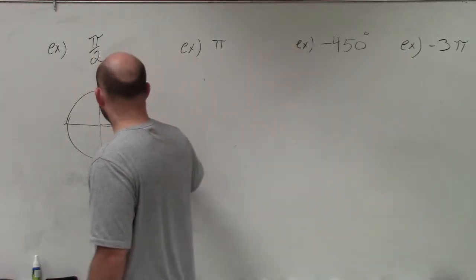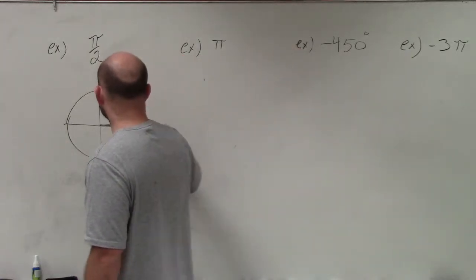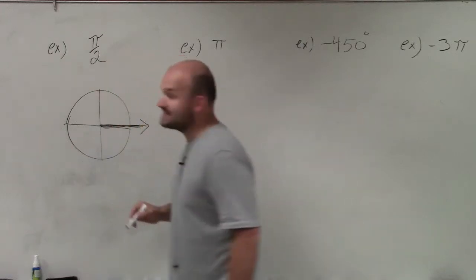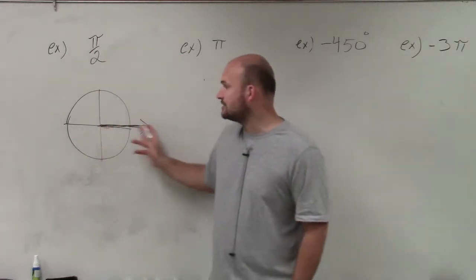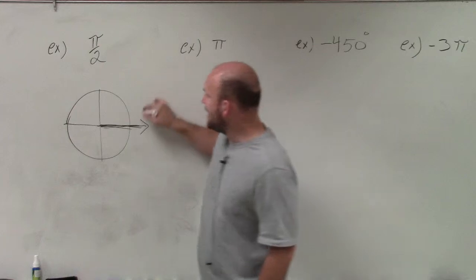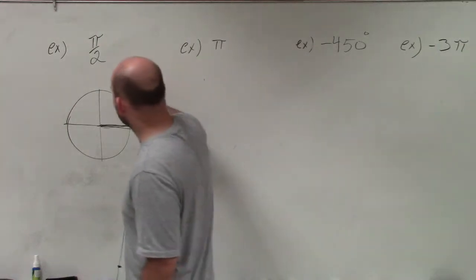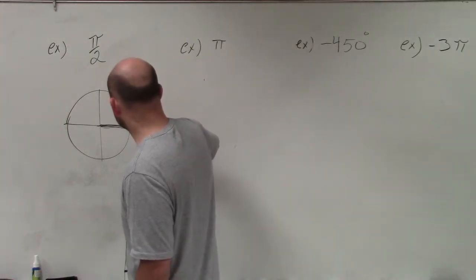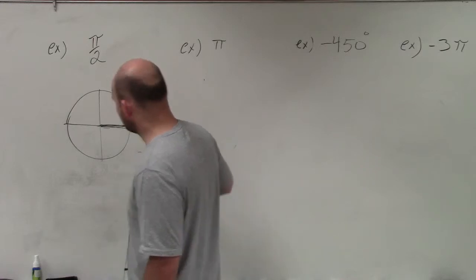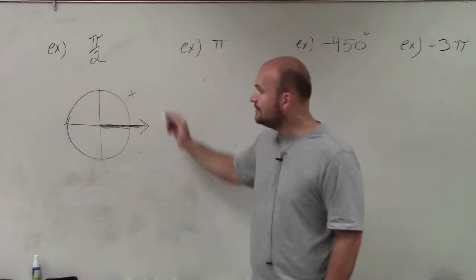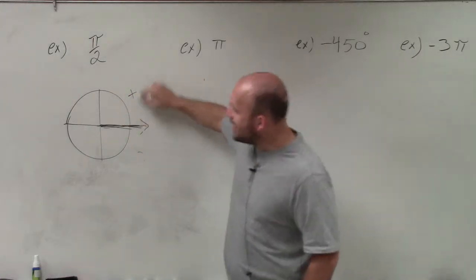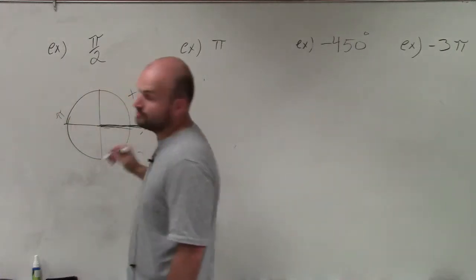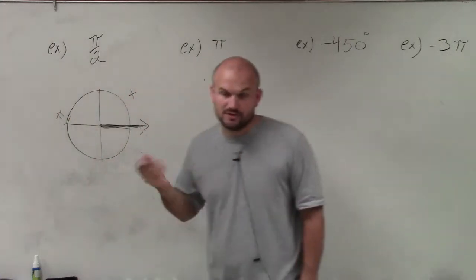We've got to remember that when we're sketching angles, we're starting in standard form where our initial side is going to be on the x-axis. When we travel counterclockwise, that's going to be in the positive direction, and clockwise will be in the negative direction. Remember that halfway around the circle has a distance of pi, and all the way around the circle would be a distance of 2 pi.